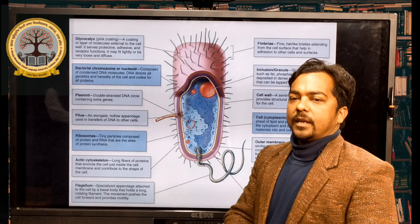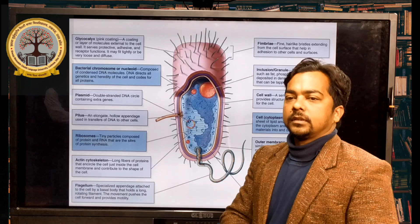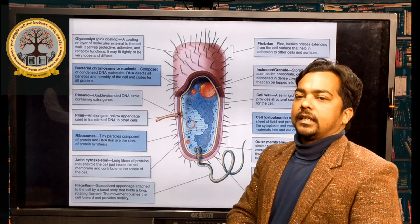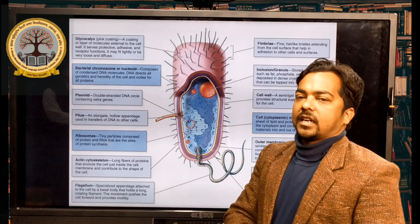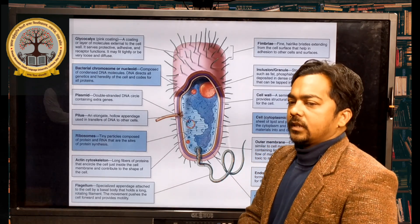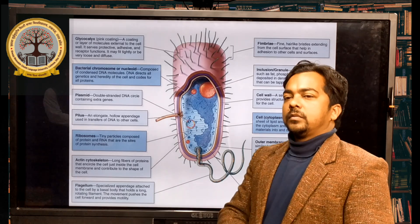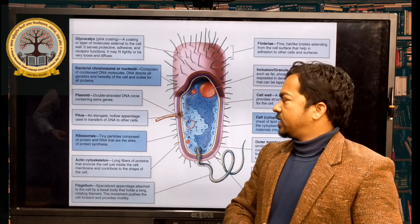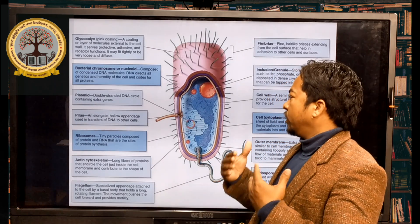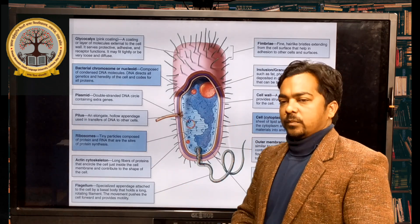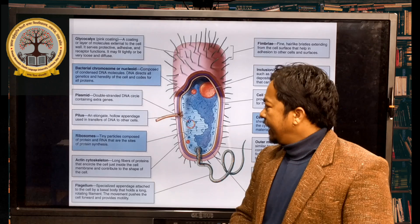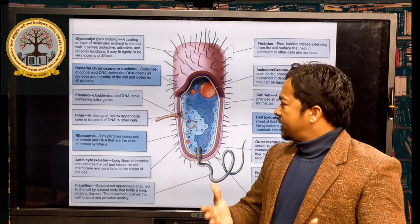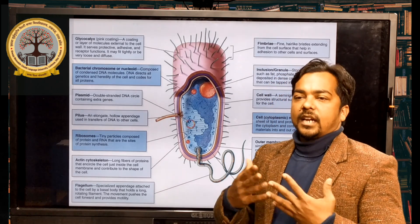So, ribosomes found in prokaryotic cells are 70S ribosomes. The main function of ribosomes is protein synthesis. Ribosomes are particles composed of protein used in synthesis.